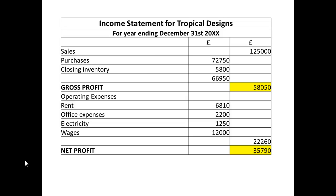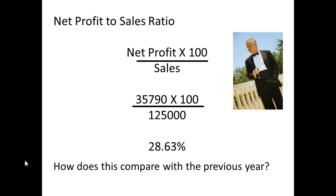We'll look at Tropical Designs. From their income statement we can get the figures for net profit and for sales. The figure for net profit here is 35,790 and the figure for sales is 125,000. So to get the net profit to sales ratio: 35,790 multiplied by 100 divided by 125,000 gives 28.63%.